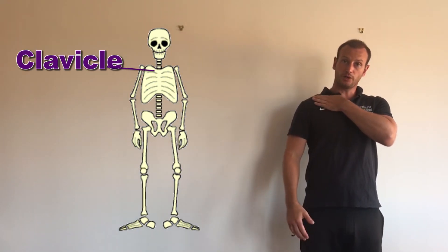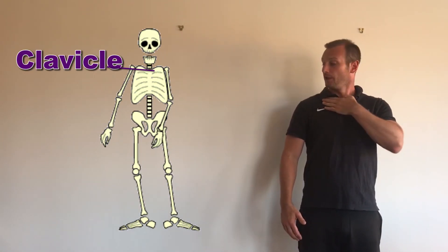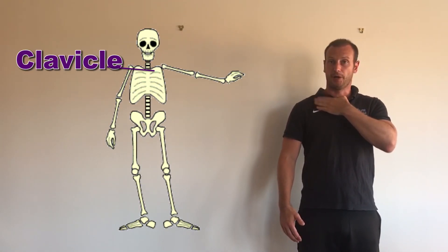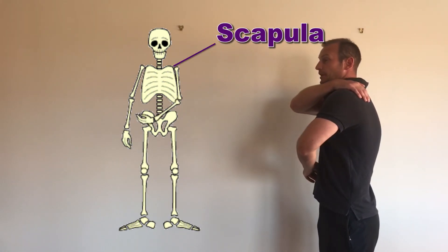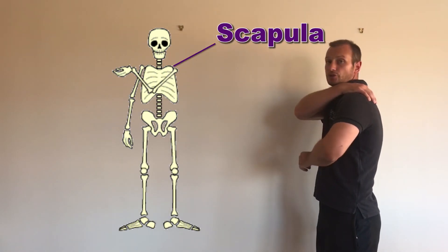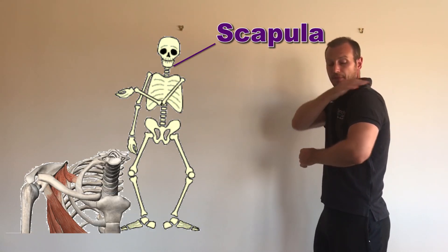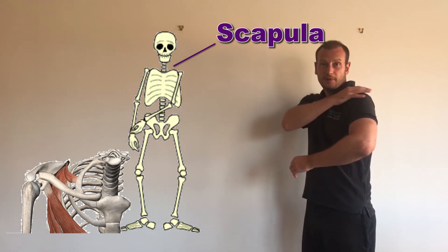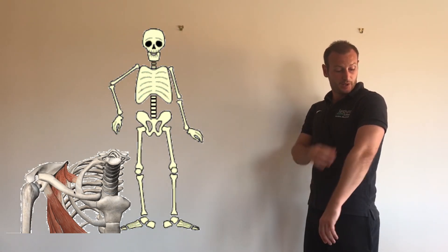In the shoulder girdle we have the clavicle, which is a flat bone, and also the scapula — the shoulder blade — and these make up the ball and socket joint of the shoulder.